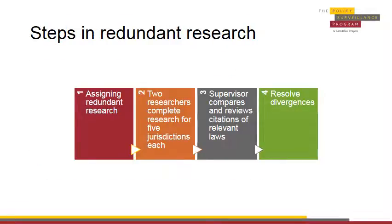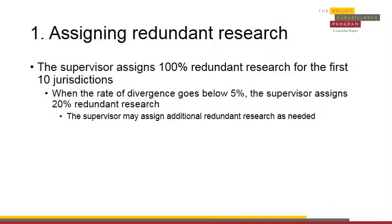These are the steps you follow when performing redundant research. The first step consists of the supervisor assigning one hundred percent redundant research for the first ten jurisdictions. This amount of redundant research should be maintained until the researchers become more familiar with the project. Once the rate of divergence between researchers goes below five percent, only twenty percent of jurisdictions need be redundantly researched. If the rate of divergence goes back up, more redundant research can be assigned. In some more complex projects, the rate of redundant research can remain at one hundred percent from start to finish.